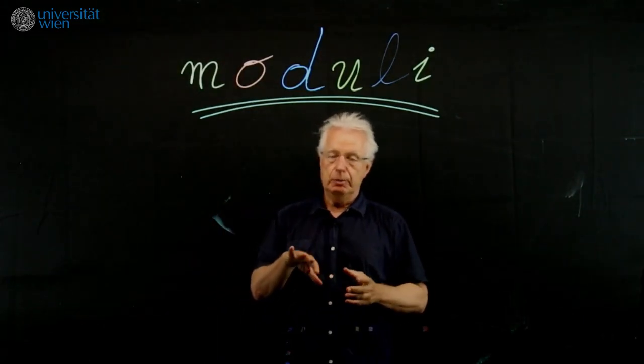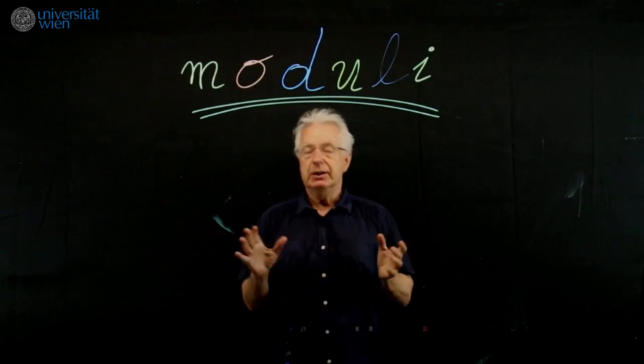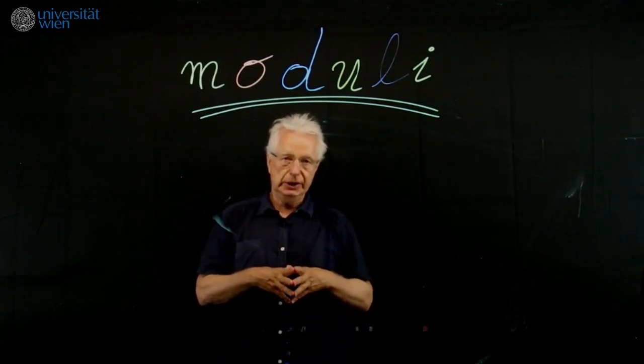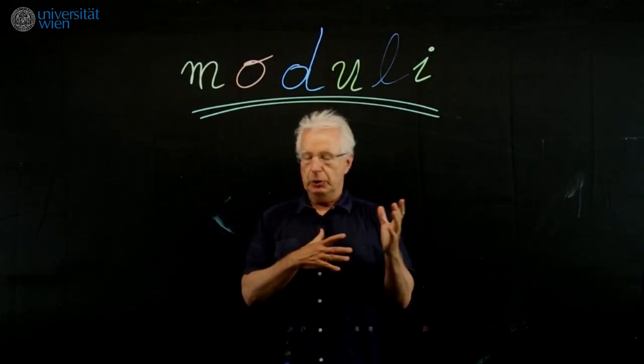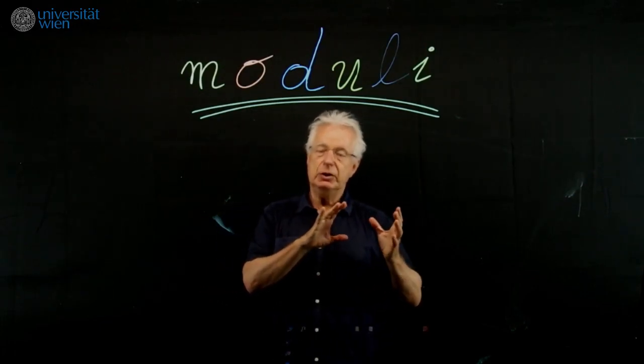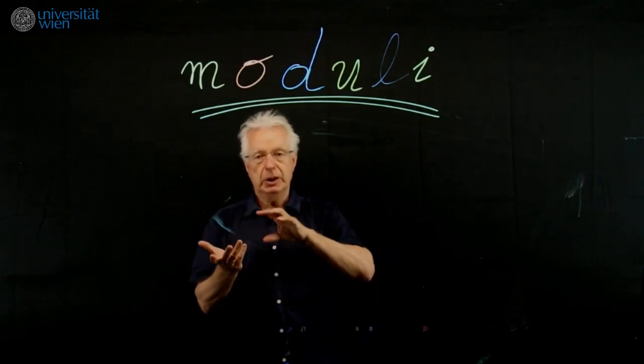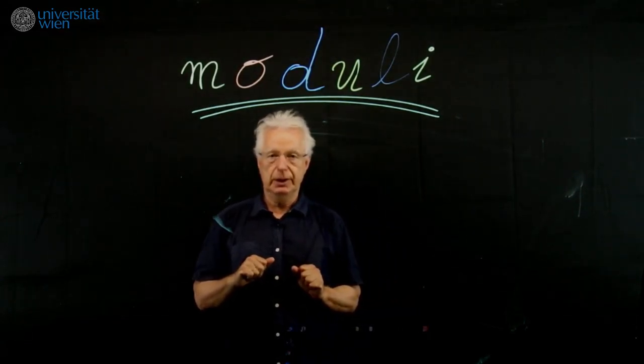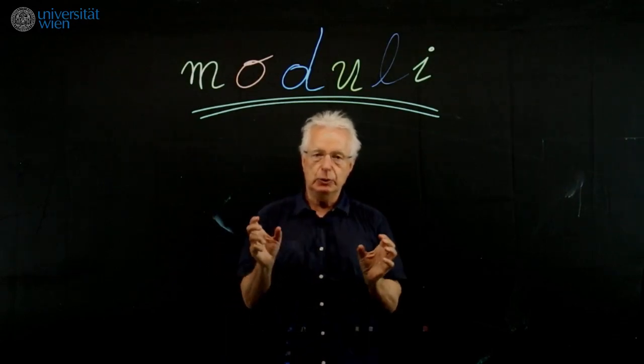Because as you will see, the moduli space of n points on the projective line is very closely related to what we call phylogenetic trees. The phylogenetic tree is something known in biology but also appears in mathematics, and these phylogenetic trees codify combinatorial information about the moduli space. That's a very exciting interplay between the two fields.